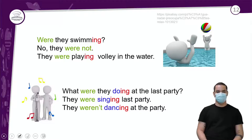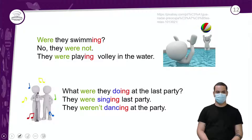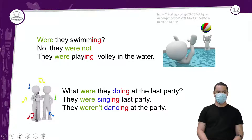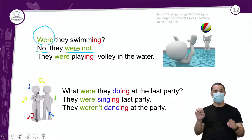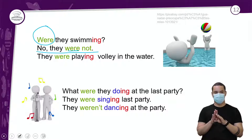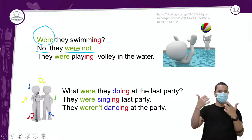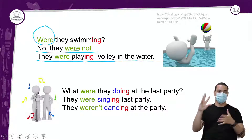'Were they swimming?' — eles estavam nadando? Resposta: 'No, they were not' — não, eles não estavam. E complementando a resposta: 'They were playing volleyball in the water' — eles estavam jogando vôlei na água. 'Were' na resposta porque a pergunta é com 'were'.